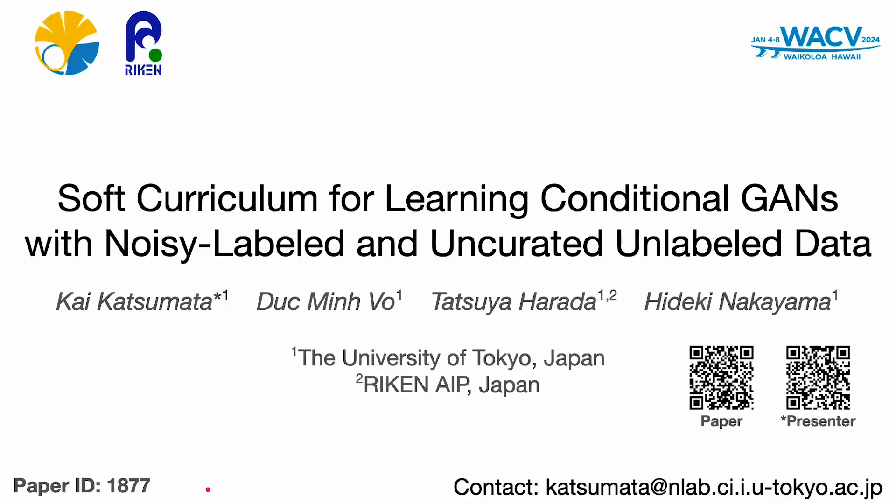Hello everyone. Today, I'm excited to present our latest research titled 'Soft Curriculum for Learning Conditional GANs with Noisy-Labeled and Uncurated Unlabeled Data.' My name is Kai Katsumata. I'm a PhD student at the University of Tokyo. This work is a collaborative effort between researchers from the University of Tokyo and Riken, including my colleagues Nukumi Bo, Tatsuya Harade, and Hideki Nakayama. I'd like to thank my colleagues for their invaluable contributions to this research. Let's begin by exploring the world of conditional GANs and why our approach is pivotal for the future of image generation.